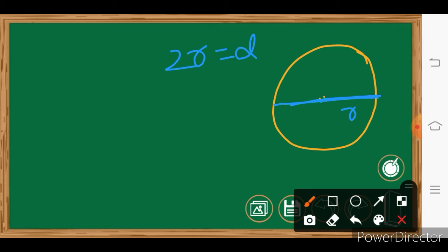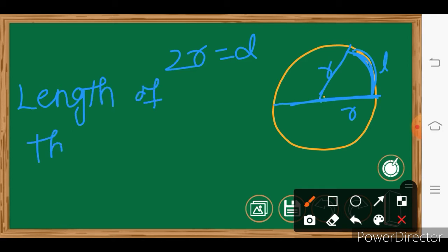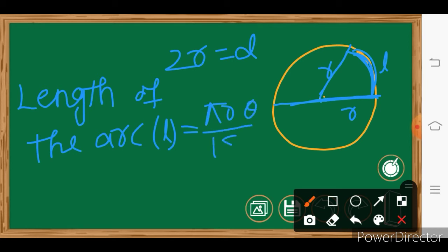The length of the circle — this is the arc, denoted by L. The length of this arc: the formula for arc length is L = π r θ / 180 degrees, where θ is the angle between the two lines.